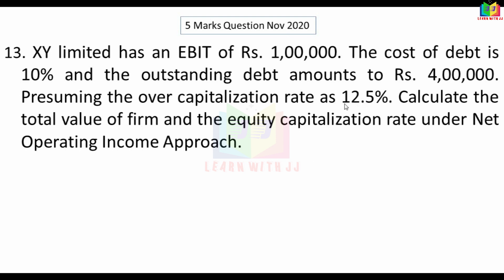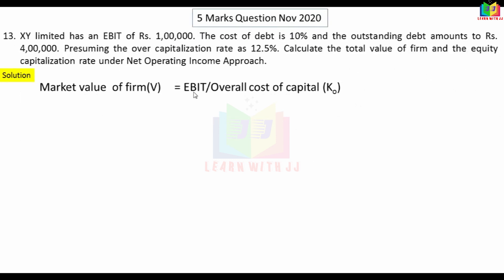Once we have EBIT and Ko, we can find the value of the firm. The formula is EBIT divided by overall cost of capital. That is 1 lakh divided by 12.5%, which gives us the value of the firm as 8 lakh.